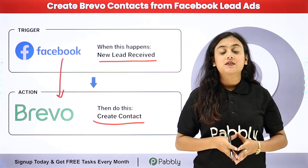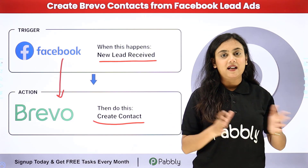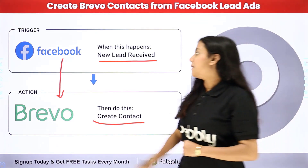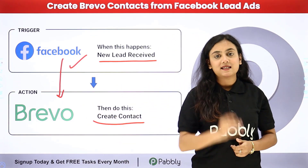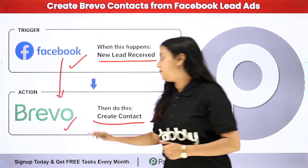Pably Connect runs on two concepts: trigger and action. In this process my trigger application is going to be Facebook lead ads and my action application is going to be Brevo.